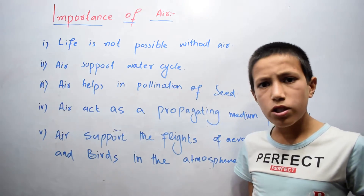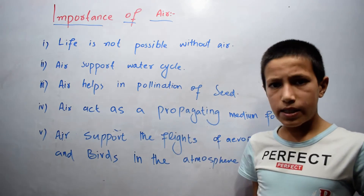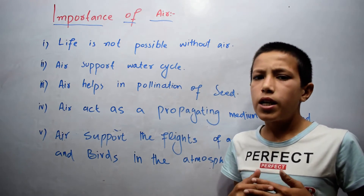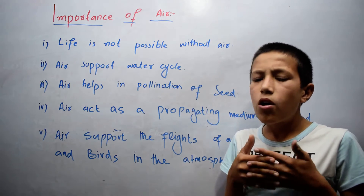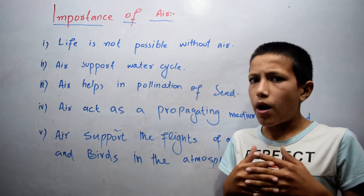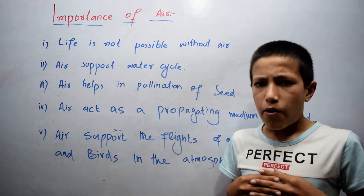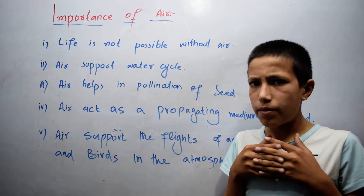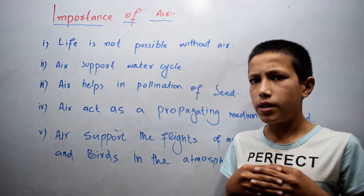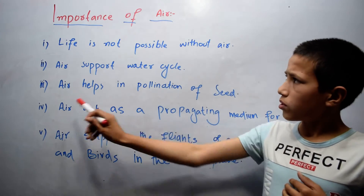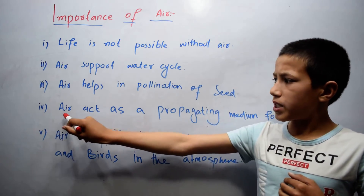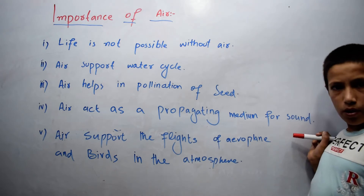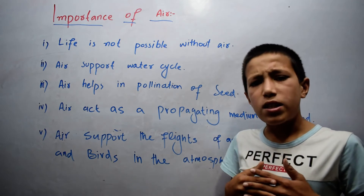The third important point is that air helps in the pollination of seeds. Pollination is a process in which pollen grains are transferred from one flower to another flower. This process also occurs by air.